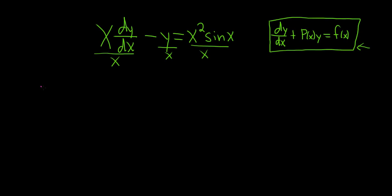That will give us dy/dx, and I'm going to write it like this: minus 1 over x times y. I'm doing that so we can identify big P. It's in front of the y. Equals, and then here we have x sine x. This is one of the x's cancels.